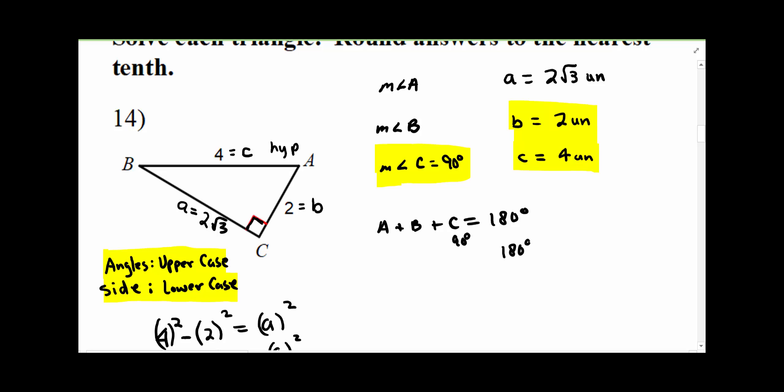We can just do 180, subtract 90, subtract the next one to figure out the third one. We don't have to do this next piece twice.